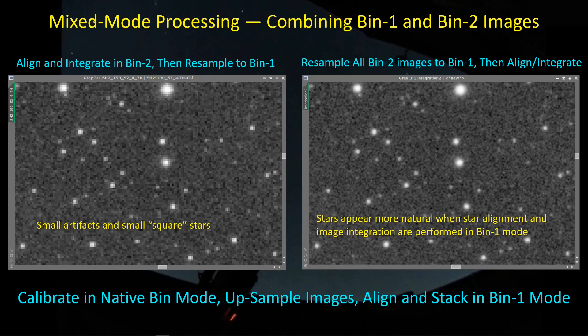Just remember when you're doing this mixed mode processing: calibrate the frames in their native bin. If you take the image in BIN-1, do all the calibration in BIN-1. If you take the image in BIN-2, do all the calibration in BIN-2. And now if you're going to combine your BIN-2 images with BIN-1 images, take all of the BIN-2 data and resample each one of those images up to BIN-1, and then do the alignment and integration at that point. The integer resample function within PixInsight doesn't have a file list — you can't just add a bunch of files to do this in a batch operation. So I've had to learn how to use the image container and process container tools within PixInsight to get this done efficiently. Let's go over to PixInsight and I'll show you what I'm talking about.